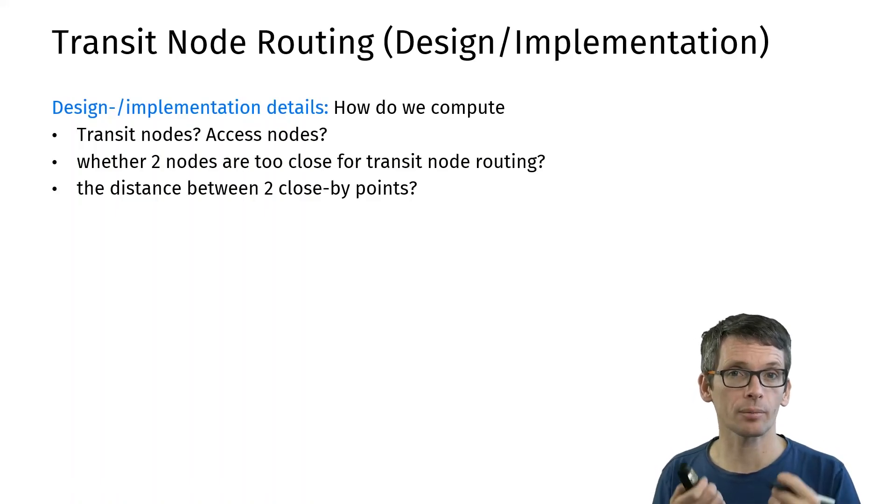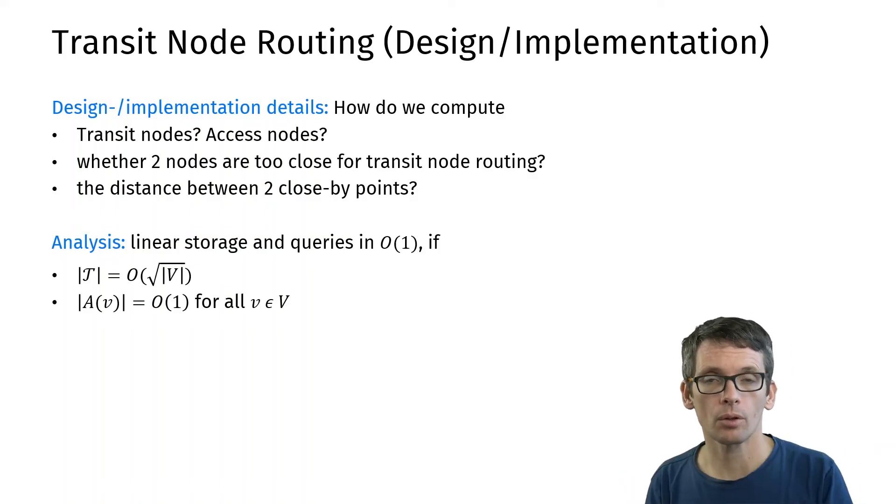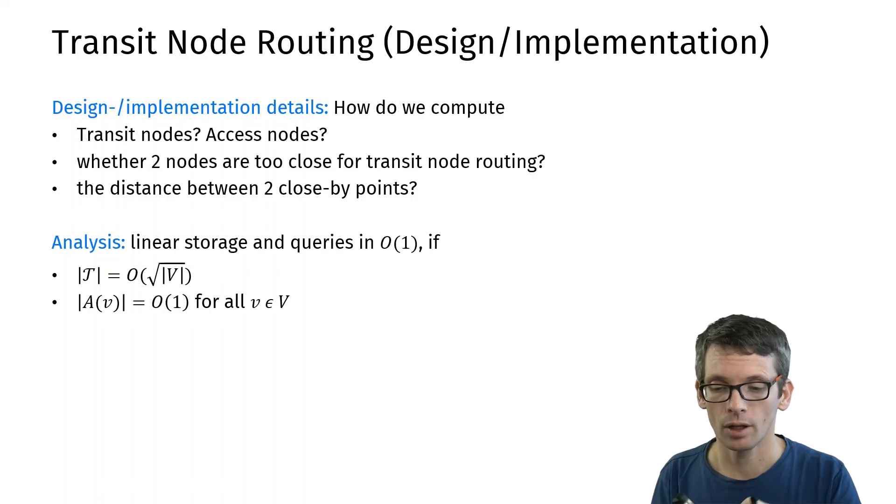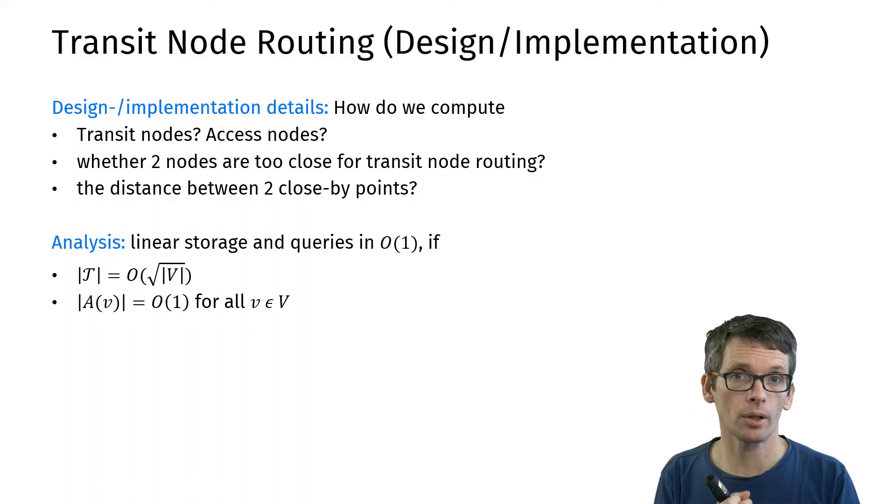In terms of the analysis, transit node routing performs very well. In particular, if I assume that the number of transit nodes is small, here order of square root of the vertices, and if I have a constant number of access nodes per starting location and target location, then I actually only need linear storage and get constant query time. So that's very fast.